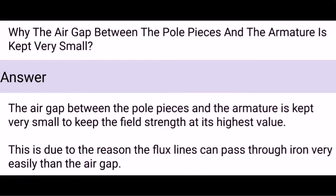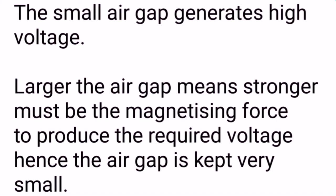Why is the air gap between the pole pieces and the armature kept very small? The air gap is kept very small to keep field strength at its highest value. This is because flux lines can pass through iron more easily than through air. A small air gap generates high voltage, whereas a larger air gap means a stronger magnetizing force is needed to produce the required voltage. Hence, the air gap is kept very small.